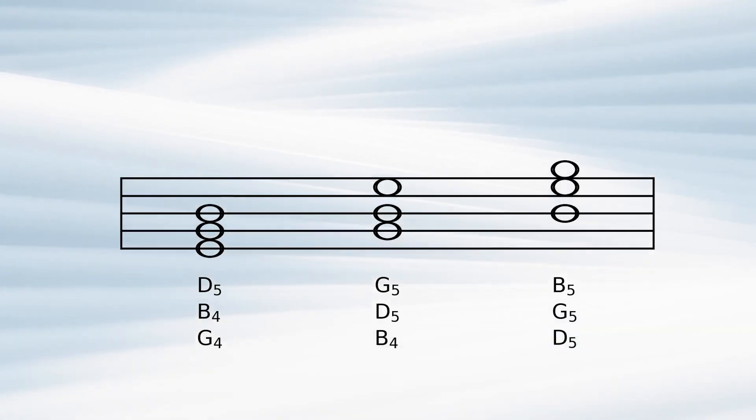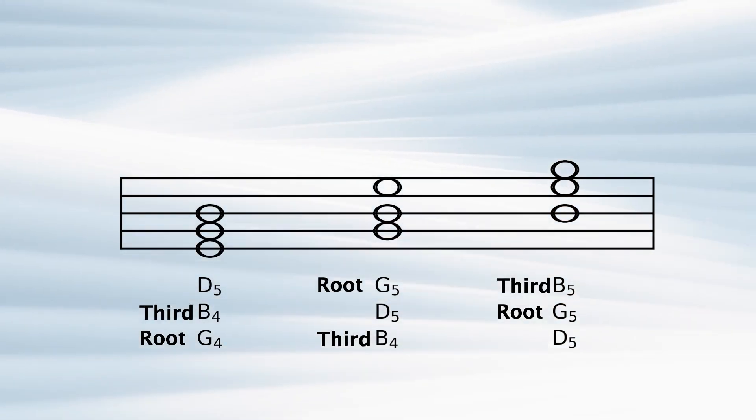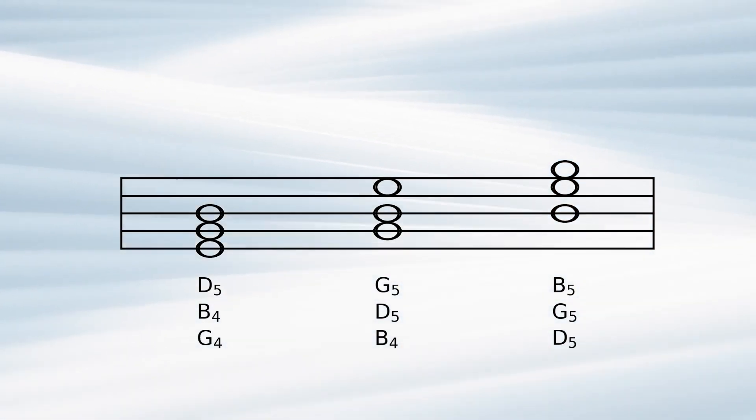Usually a chord is constructed with the written order from the deepest to the highest note: first root, then third, then fifth. But you can change the order, which is called an inversion.